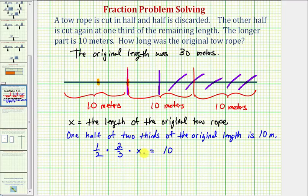And now let's simplify the left side here. Notice how we can simplify the product of one half and two thirds. Notice there's a common factor of 2 here. 2 over 2 simplifies to 1. So this gives us the equation one third x equals 10.